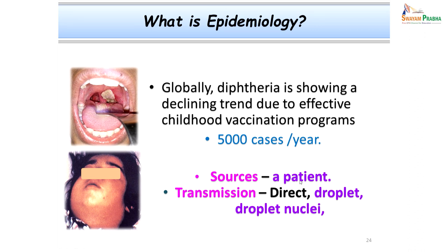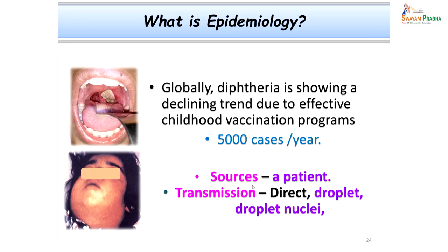The source of infection is especially the patient. The good news is that not all Corynebacterium diphtheriae are toxigenic — only those infected by a lysogenic bacteriophage are capable of releasing the toxin and are highly virulent or pathogenic strains. That is the reason a carrier may not be able to transmit the disease. Transmission occurs through direct patient-to-healthy-contact spread or via droplet aerosols and droplet nuclei.